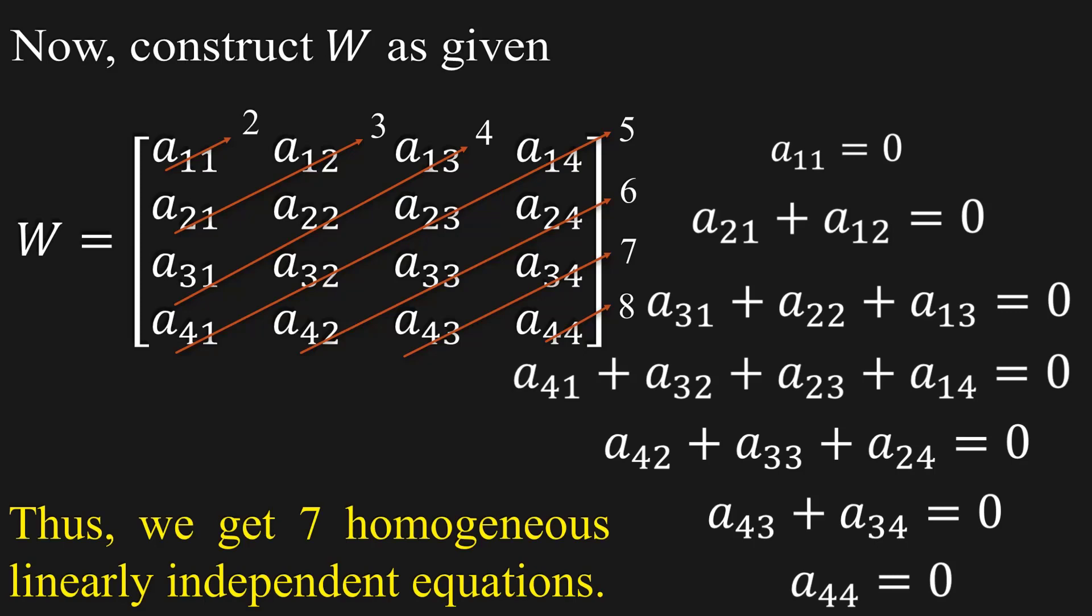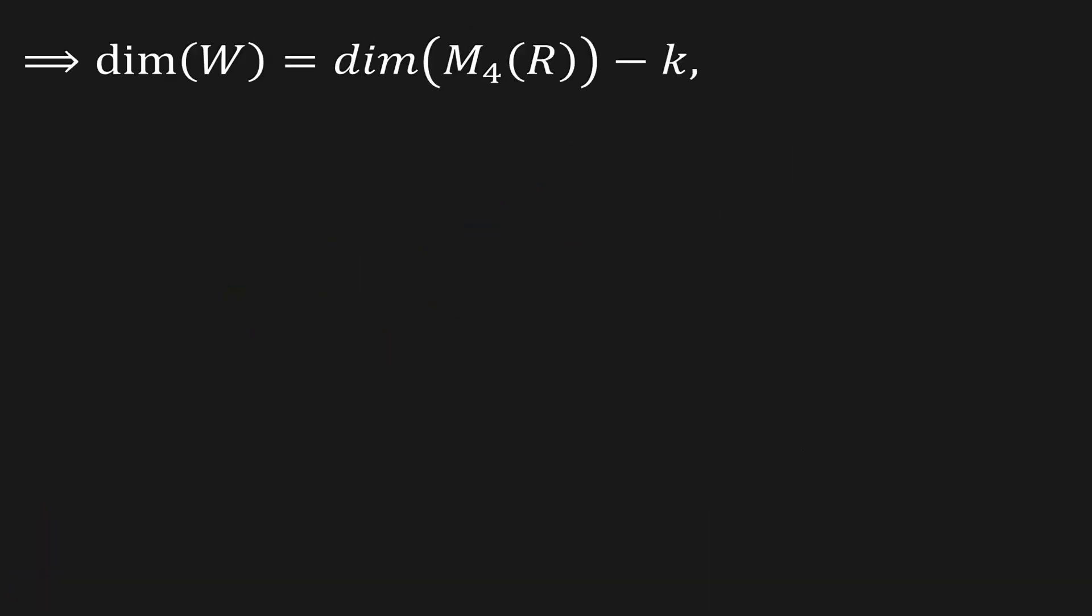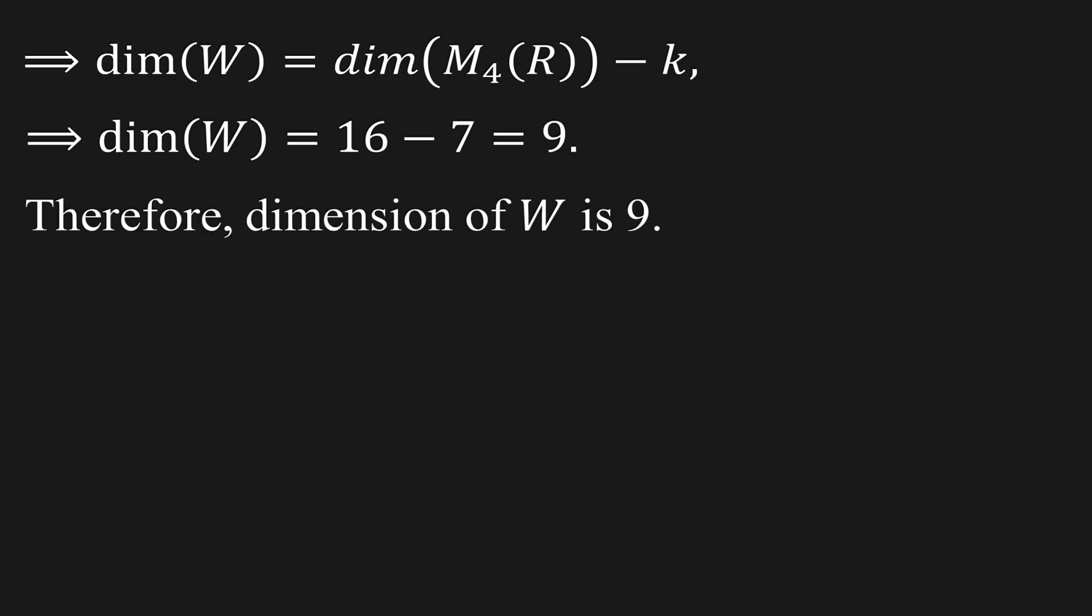Thus, we get 7 homogeneous linearly independent equations. This implies dimension of W equals dimension of M4(R) minus k. This further implies dimension of W is 16 - 7 = 9. Therefore, dimension of W is 9. Hence, option 3 is true.